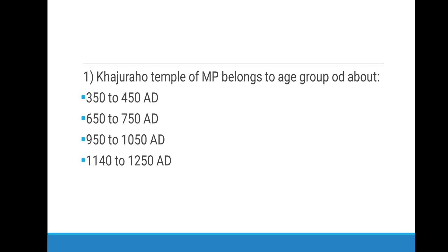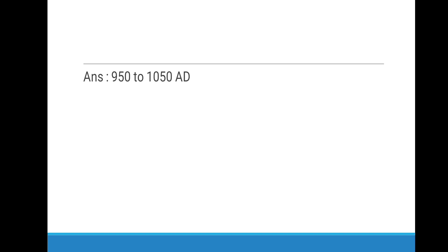First question: Khajuraho Temple of M.P. belonged to the age group of about — options are 350-450 AD, 650-750 AD, 950-1050 AD, or 1140-1250 AD. The answer is 950-1050 AD.